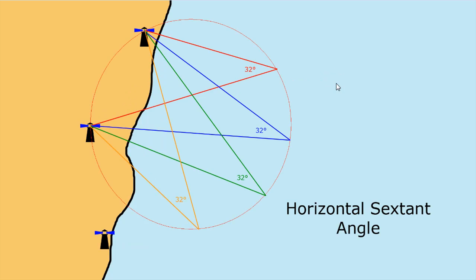Not all position lines are straight — some position lines are curved. This curved position line is developed from what is called a horizontal sextant angle. A horizontal sextant angle is a measure of the angle between two objects. If you're sitting out on the ocean with a sextant — a device that measures the angle between things — and you're reading that the angle between this lighthouse and this lighthouse is 32 degrees, measuring 32 degrees doesn't tell you exactly where you are, but it will tell you that you lie on an arc. This arc has many positions where that angle is 32 degrees, so you know you're on the line somewhere.